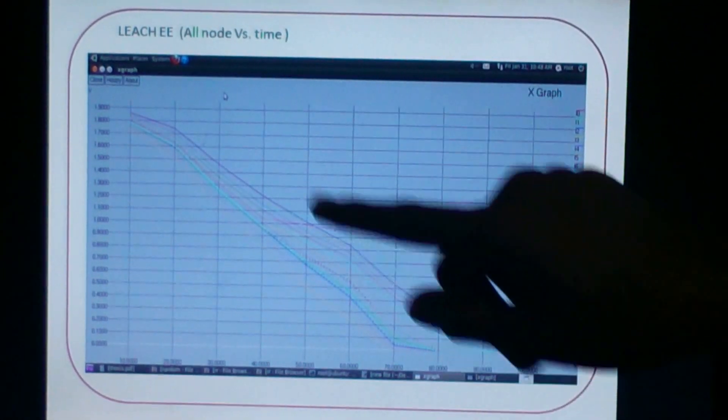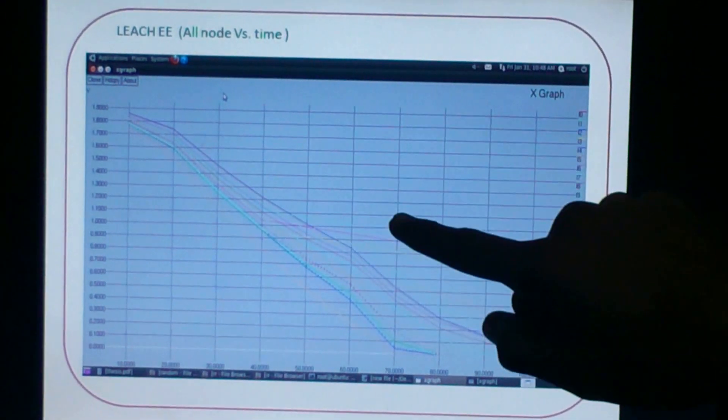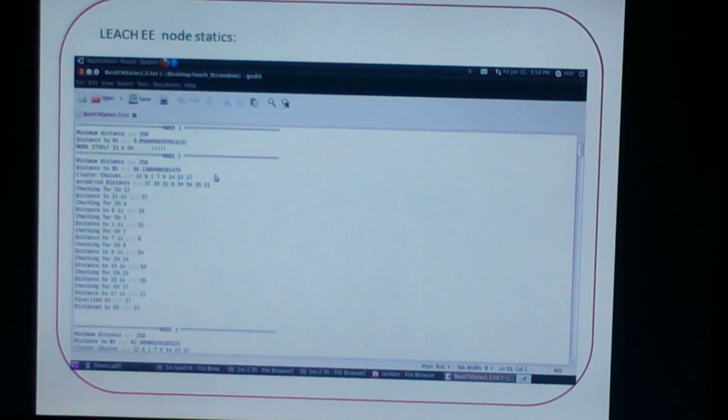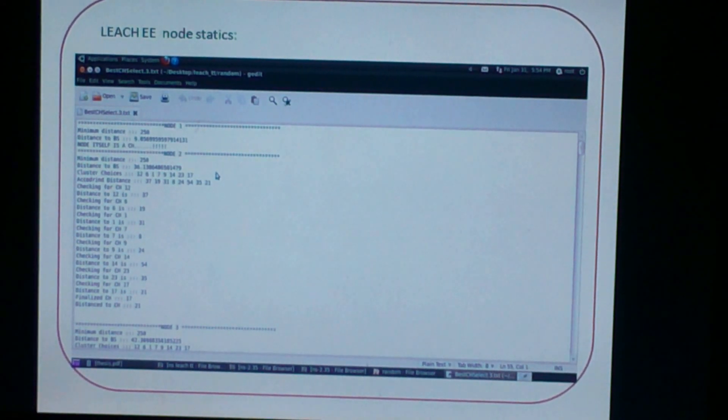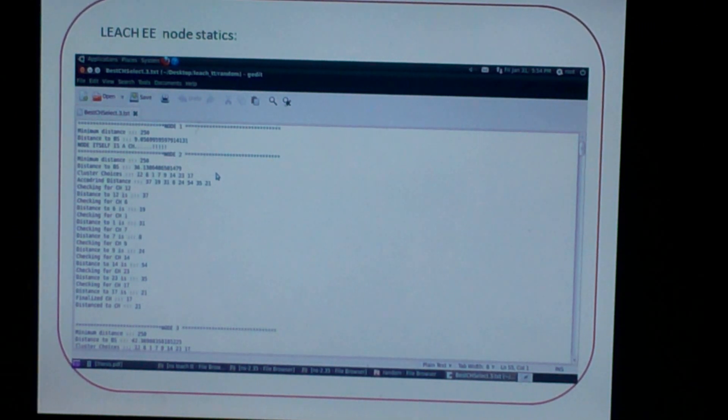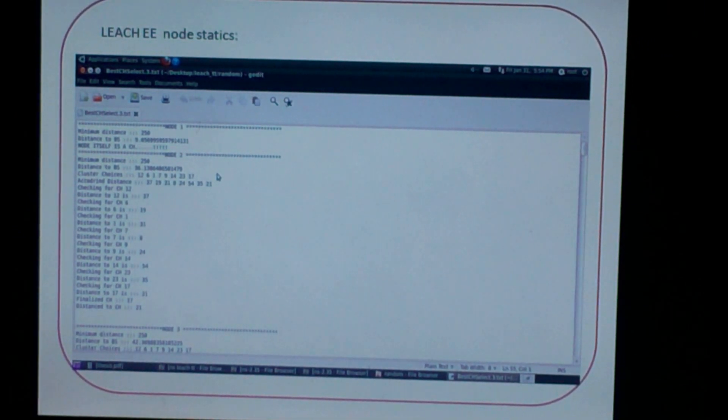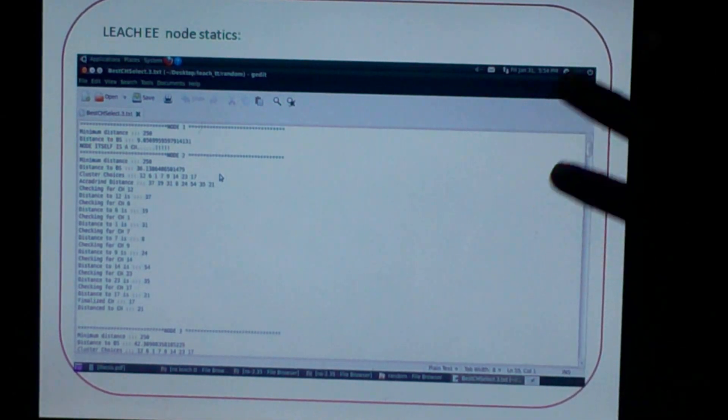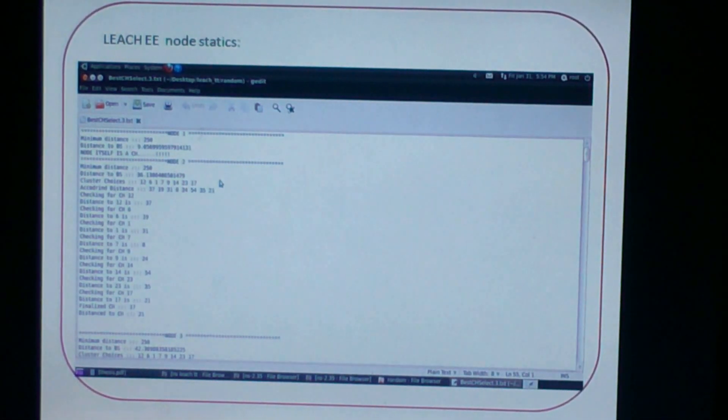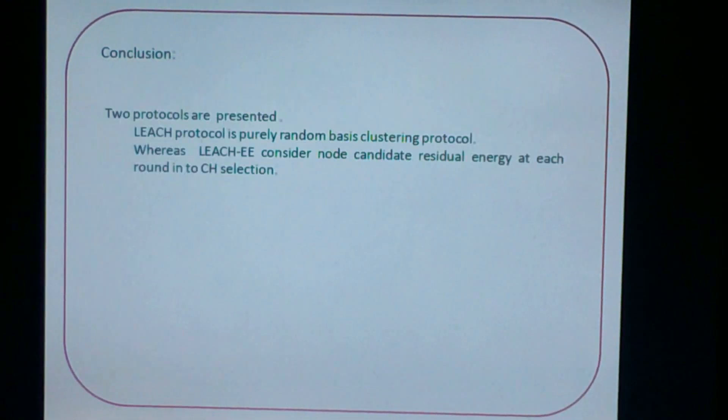Similar for all nodes versus time for LEACH Double E and network lifetime for LEACH Double E. I have also found which node is in which cluster, one cluster containing how many nodes, and which nodes are in which cluster. We can see that from this slide. It is generated as a result in NH2.